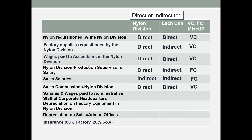Salaries and wages paid to administrative staff at corporate headquarters: this staff works to benefit both divisions, so it will be indirect to the nylon division and indirect to each unit. And because it's comprised of both salaries and wages, we would say it is a mixed cost.